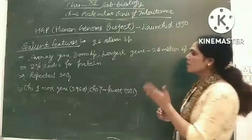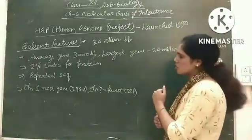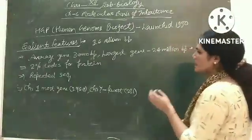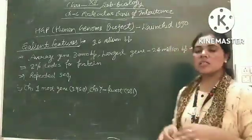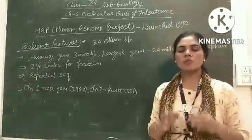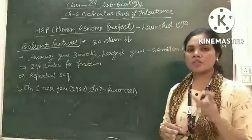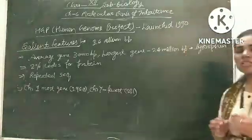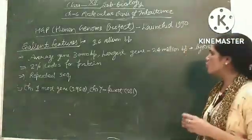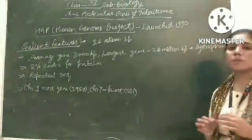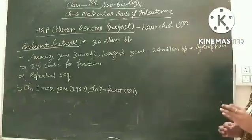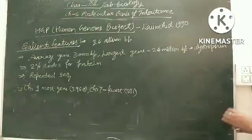In our complete human genome, the average gene consists of 3,000 base pairs. On average, a gene has 2.4 million base pairs — for example, the gene called for dystrophy.